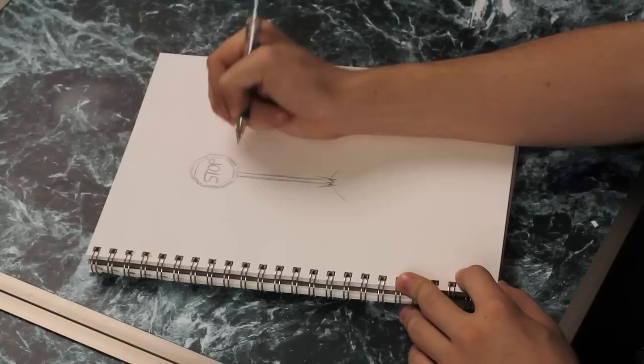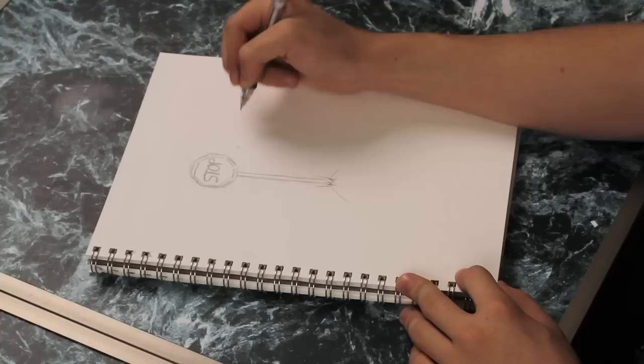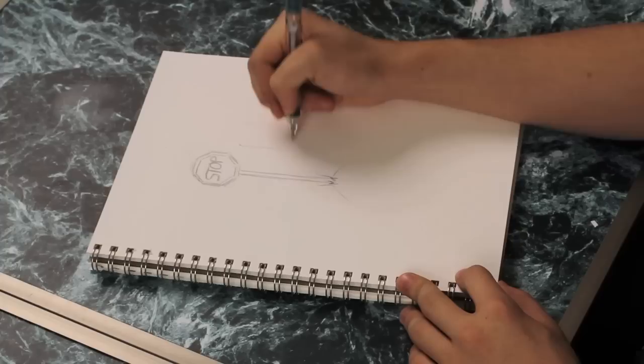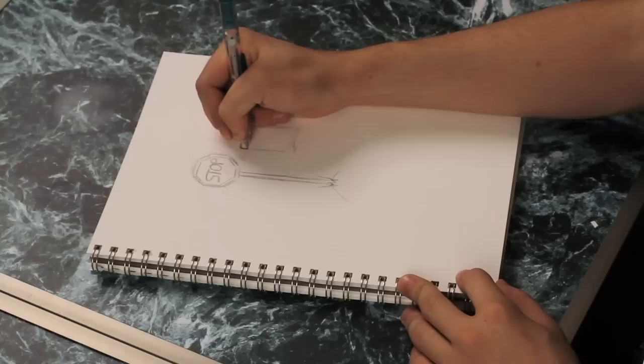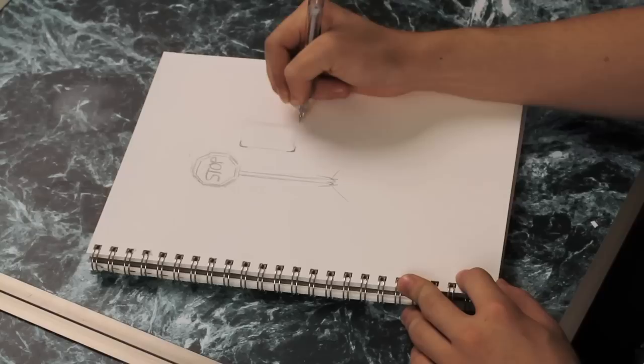Another sign I'm going to show you how to draw is the speed limit sign, which is a rectangular shape. So we go ahead and just map out that rectangle, however large you want it. And then the corners of that aren't sharp. They're actually curved off. So I'm going to go ahead and draw those in.